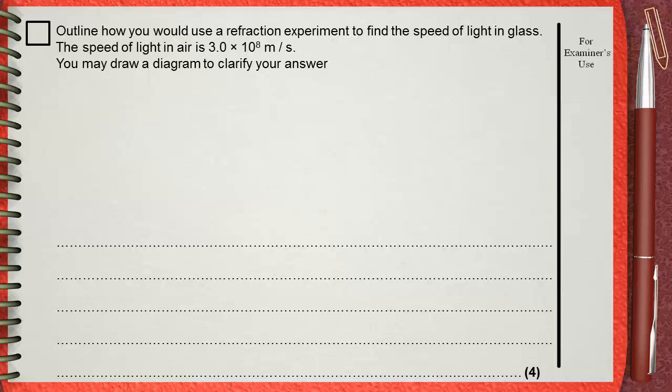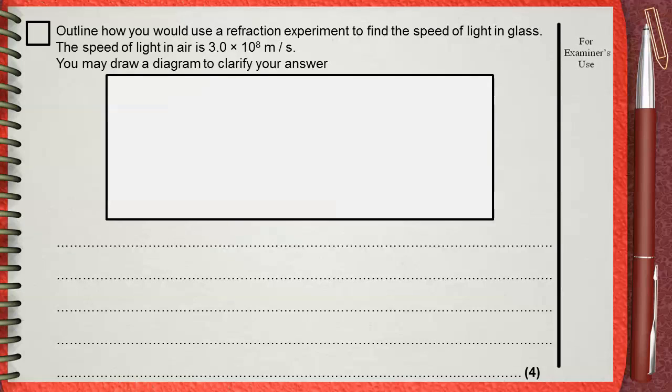First let's draw a diagram. You will draw a white paper, and this indicates the rectangular block. This is the ray box, which produces the incident ray. The glass refracts the ray towards the normal.